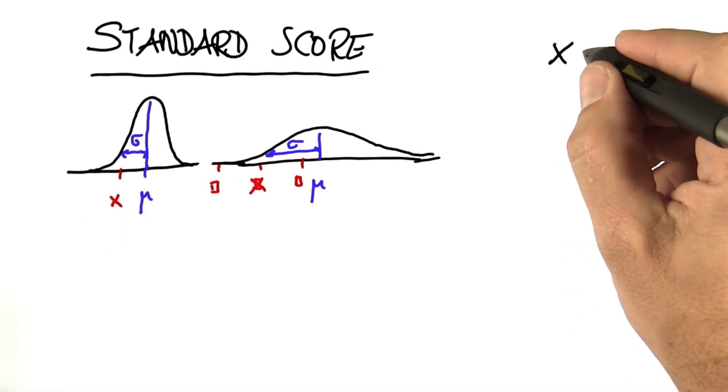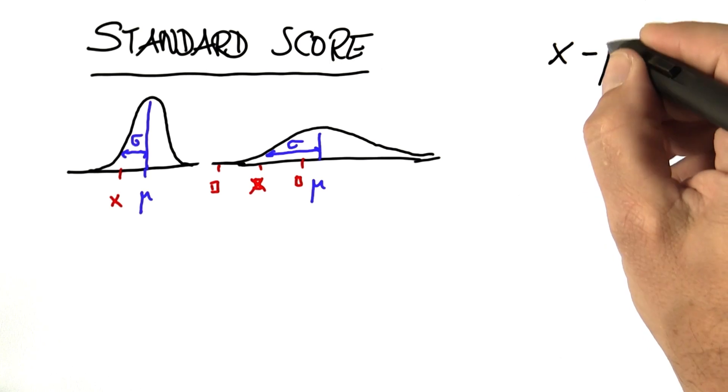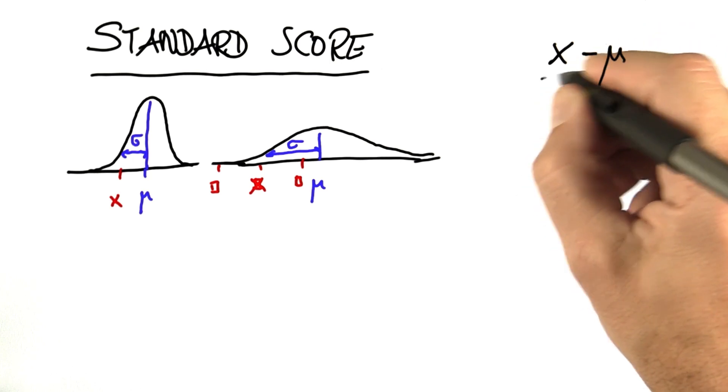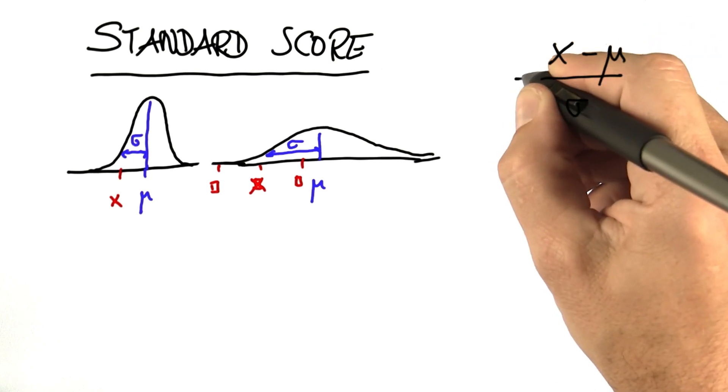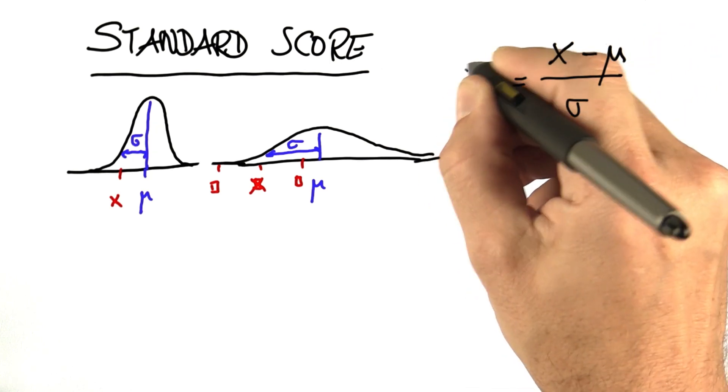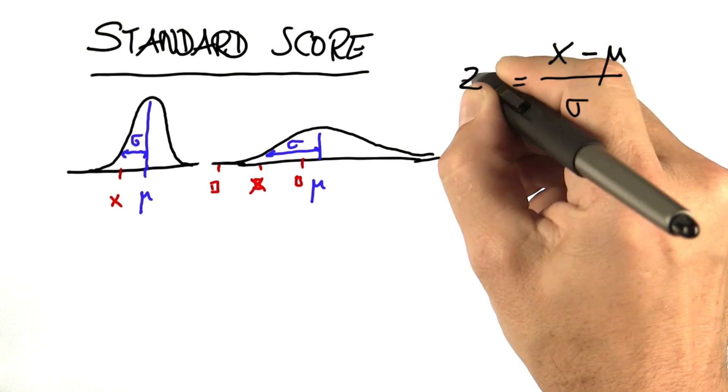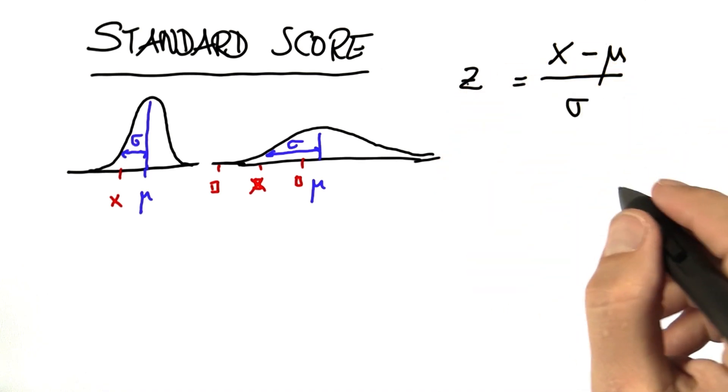Now that's interesting — that's called the standard score. So given a point x, you subtract the mean and you divide by the variance, and that gives you the standard score.